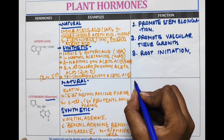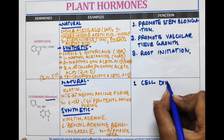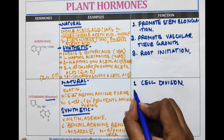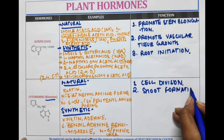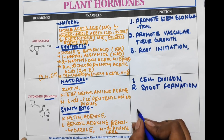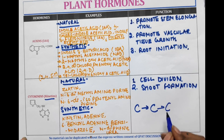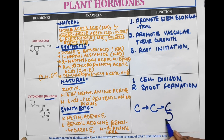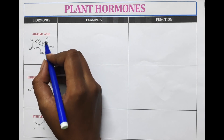Let's discuss the function of cytokinin. It helps in promoting cell division and shoot formation. You can remember this with C's: Cytokinin starts with C, cell division starts with C, and combining two C's — one normal, one inverted — forms an S, representing shoot formation.